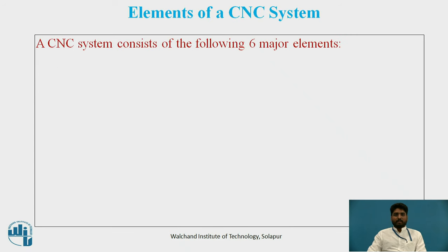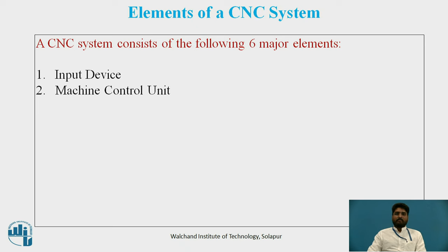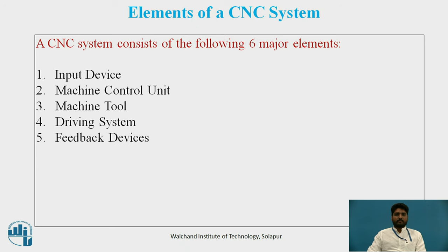We will have a quick revision of the elements of the CNC system. First is Input Devices, second is Machine Control Unit, third is Machine Tool, fourth is Driving System, fifth is Feedback Devices, and sixth is Display Unit. Input Devices are explained in detail in video number 1. Now we are going to see from the second major element, that is the Machine Control Unit.